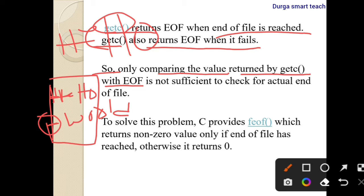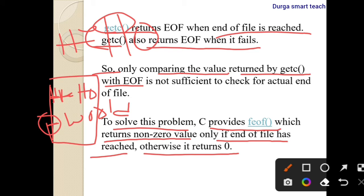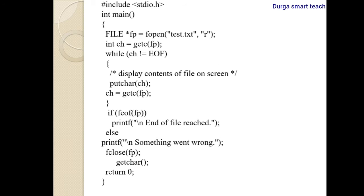To resolve this problem, C provides the feof() function, which returns a non-zero value only if the end of file has been reached; otherwise it returns zero. If it returns zero, that means it is not the end of the file.